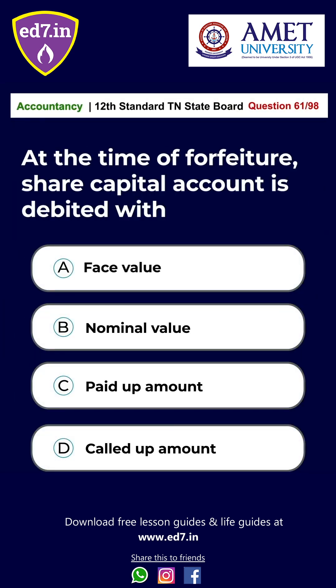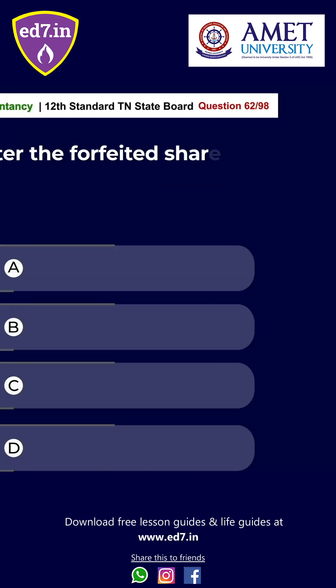Question No. 61: At the time of forfeiture, share capital account is debited with: A. Face Value, B. Nominal Value, C. Paid Up Amount, D. Called Up Amount. The answer is D: Called Up Amount.